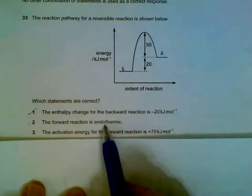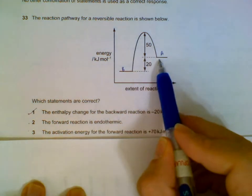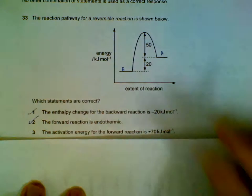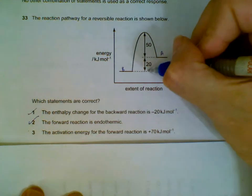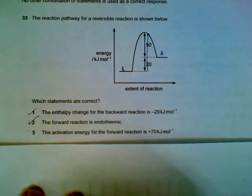Forward is endothermic - if you go forward, you'll see that we have to gain energy to reach the level of A. So forward is endothermic. Activation energy for the forward is plus 70. Activation will be this level all the way up to the peak here, so it is plus 70.